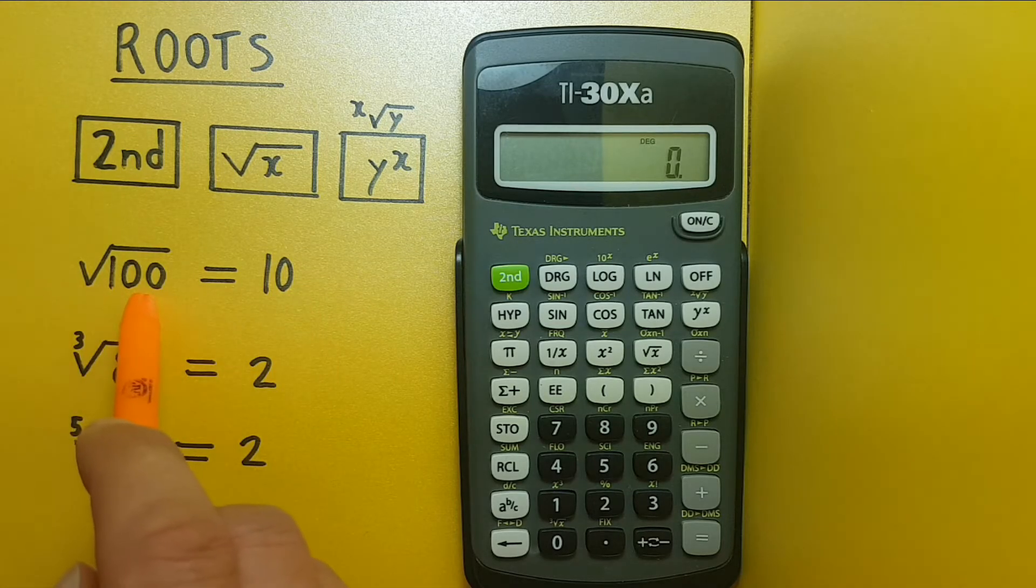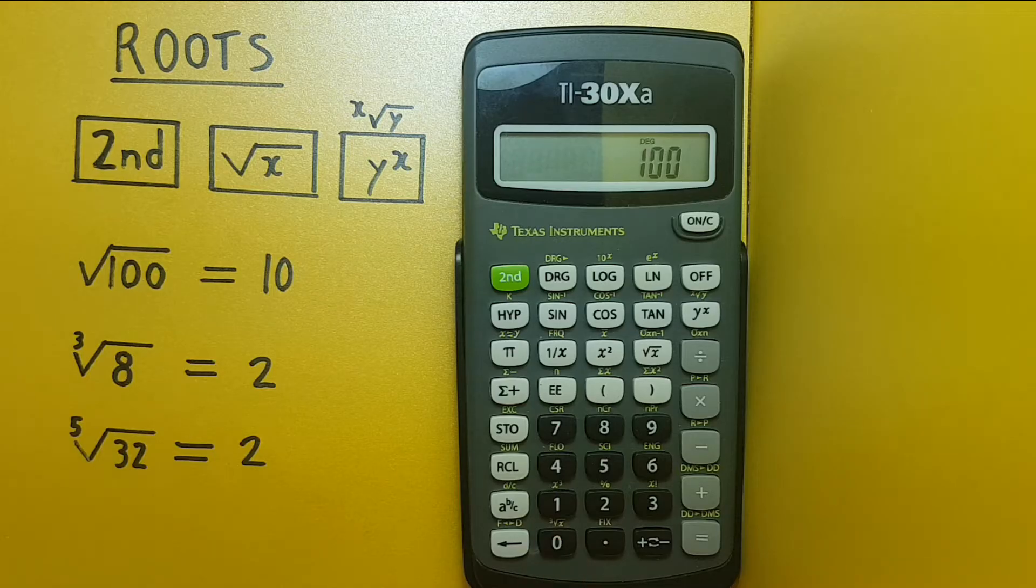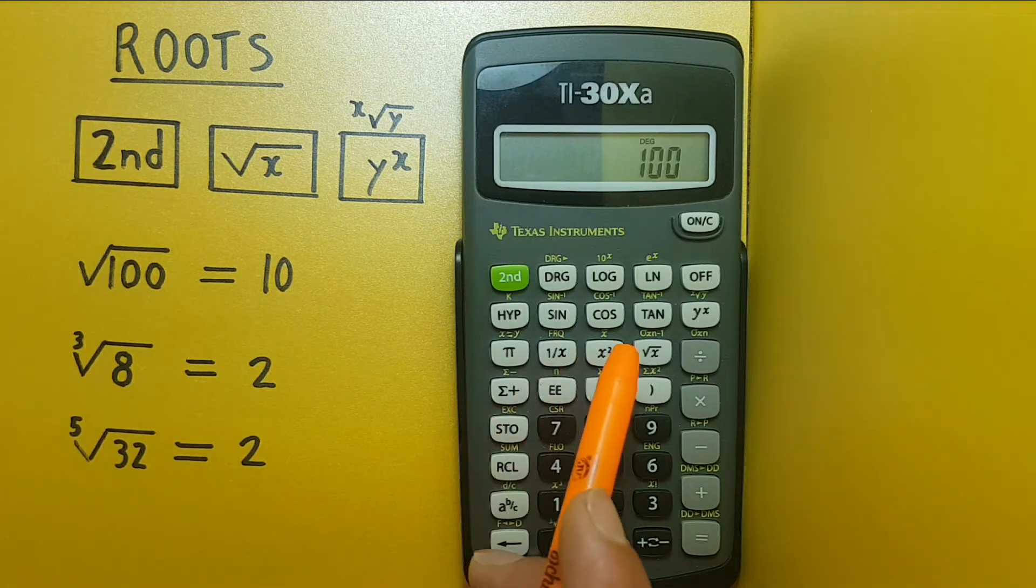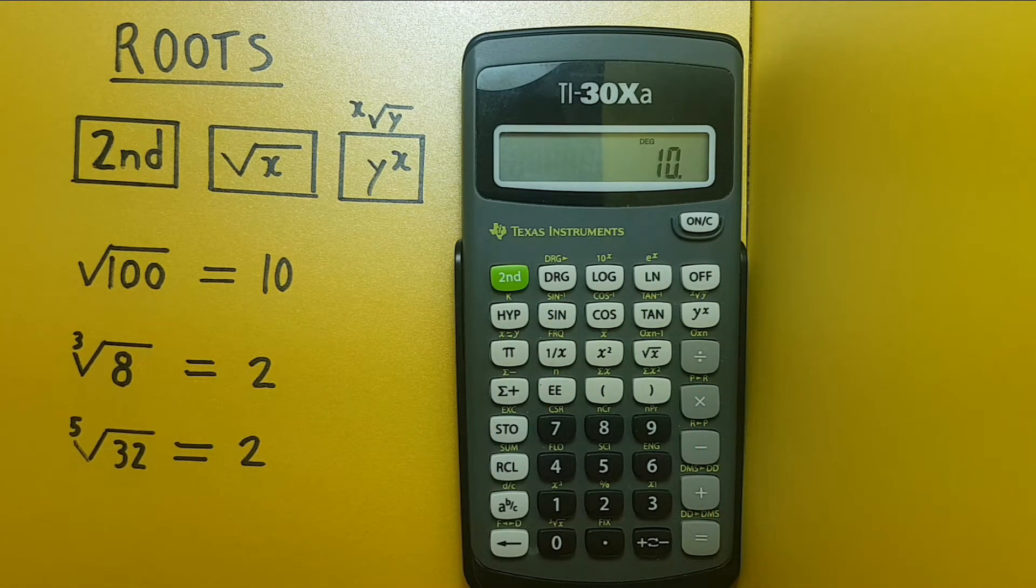So if we want to find the square root of this we go 100 on the screen and then hit the square root key. That gives us 10 which we know is the right answer.